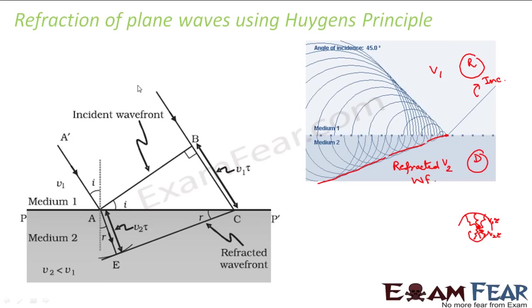It would be somewhat like this because in two different media the waves travel with two different velocities. That is why you can see in this figure they are not exact circles. The upper portion and lower portion have two different radii in two different media. The important point to note: when we were talking about reflection, two different media don't come into picture — the incident wave front and reflected wave front are both in the same medium. But when we talk about refraction, we take into consideration two different media.